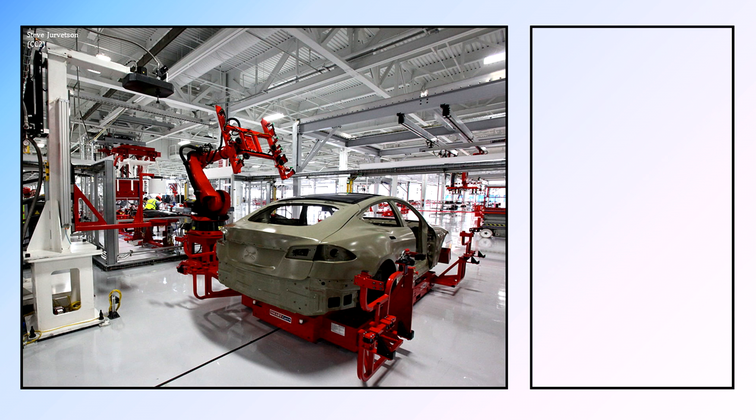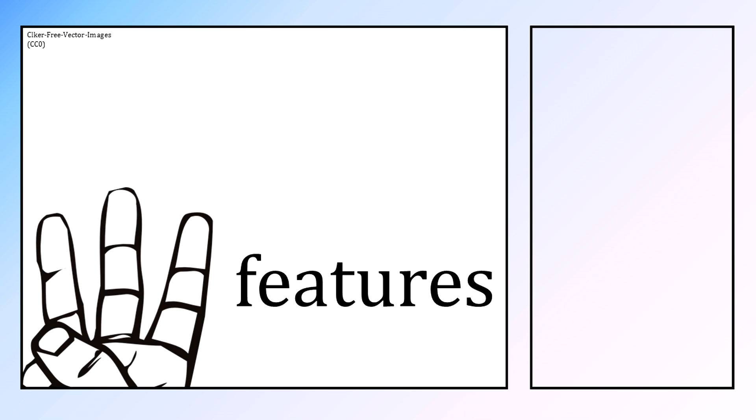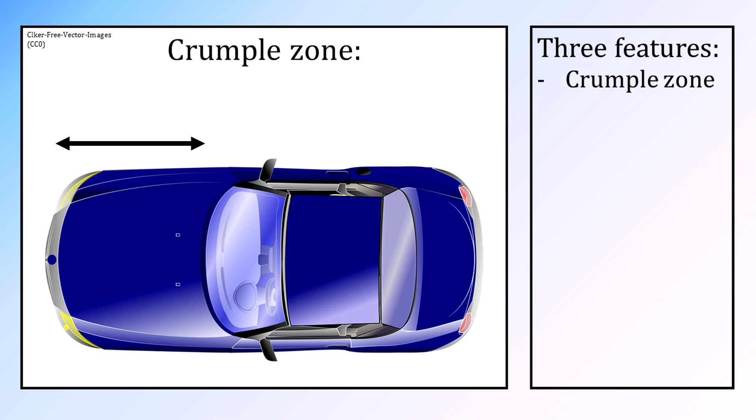But engineers do their job and have invented three major features that drastically decrease injuries in such an event. First, the crumple zone.